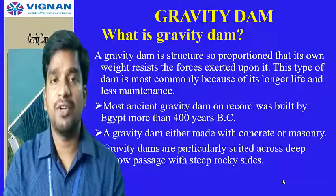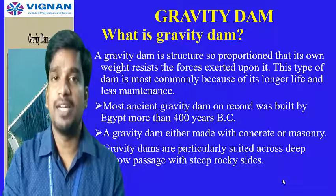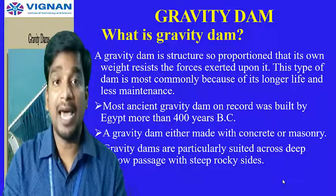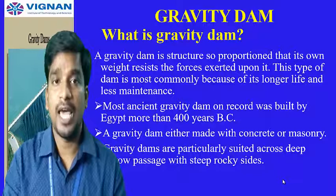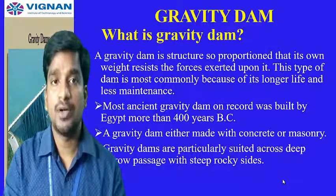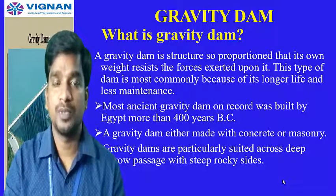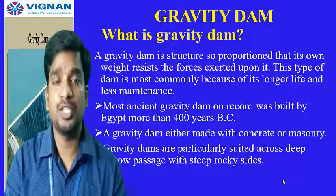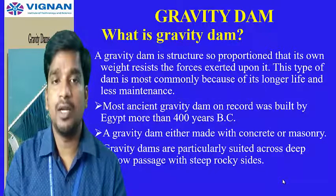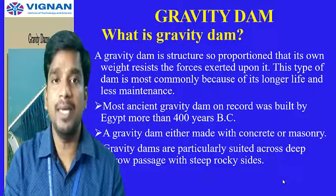Gravity dams are constructed where there is a narrow, deep passage or valley available. The side slopes should be very steep and rocky. A narrow deep valley is required, with deep rocky slopes on both sides. These are the conditions under which a gravity dam can be constructed.